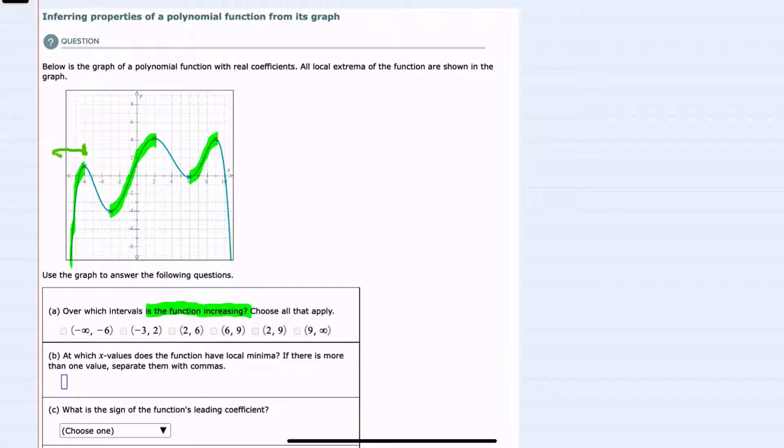So from negative infinity to negative 6 it is increasing, and then it's increasing again over this stretch which starts at the x-value of negative 3 and goes to the x-value of 2. So from negative 3 to 2, and then again where x equals positive 6 until x equals 9 it's increasing. So these are the three intervals where the function is increasing.